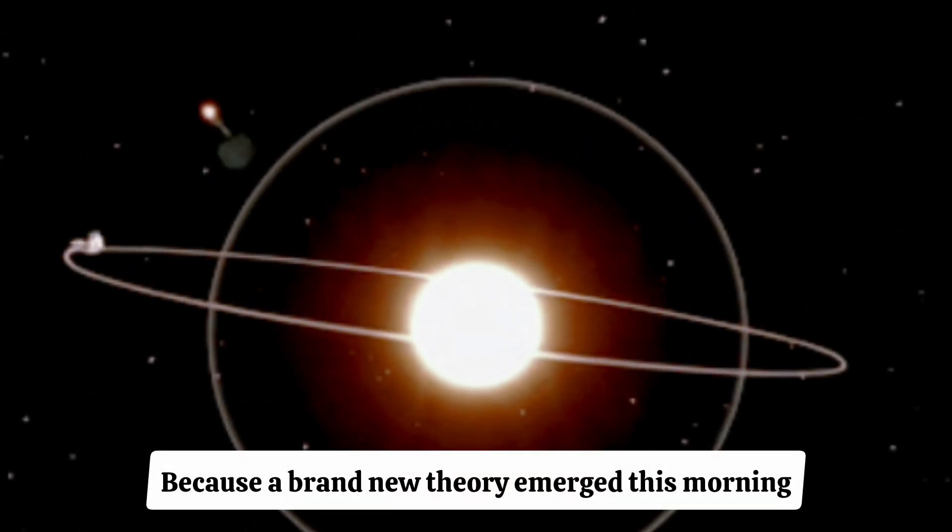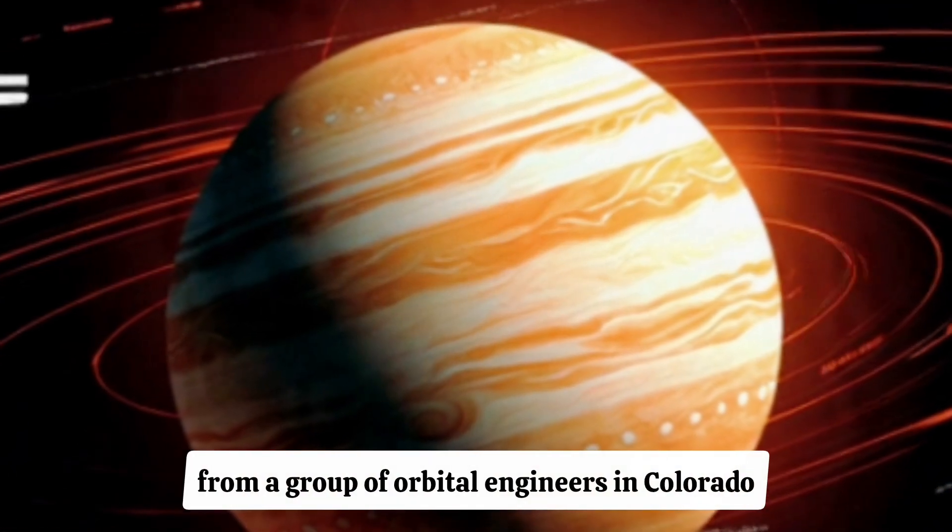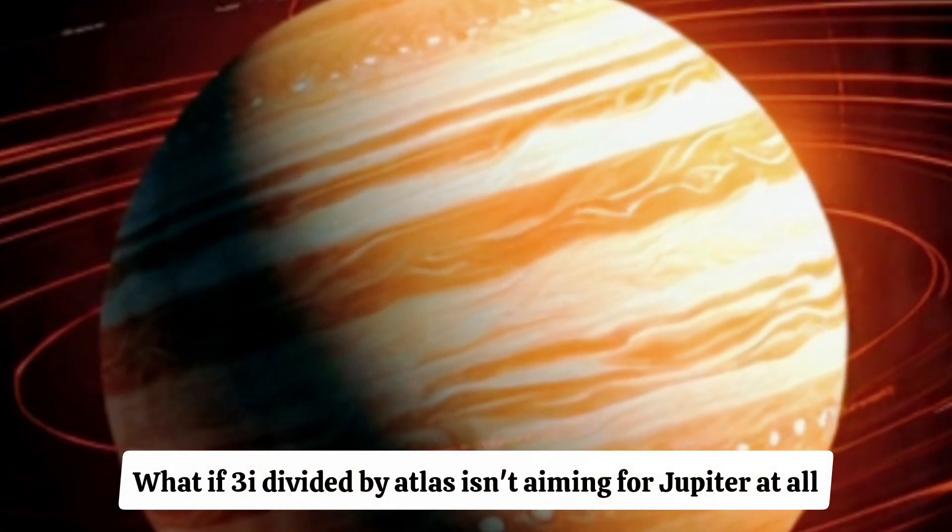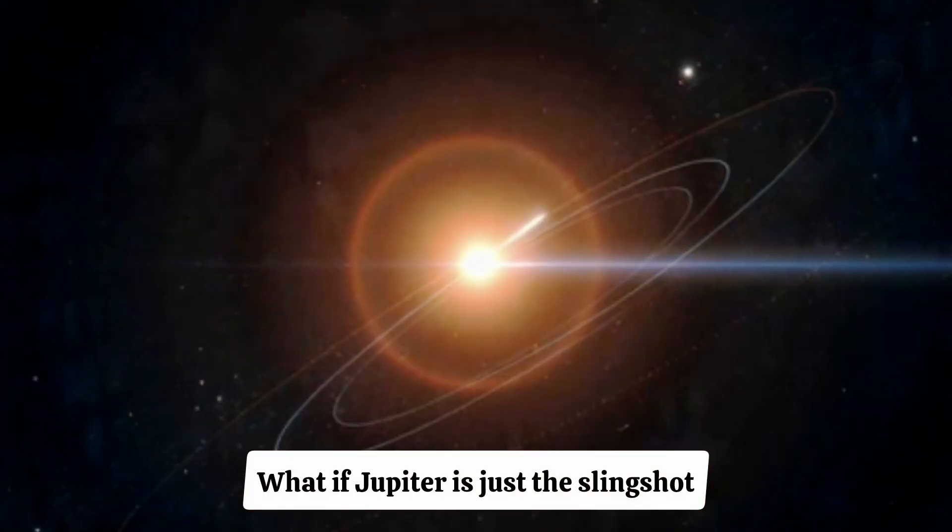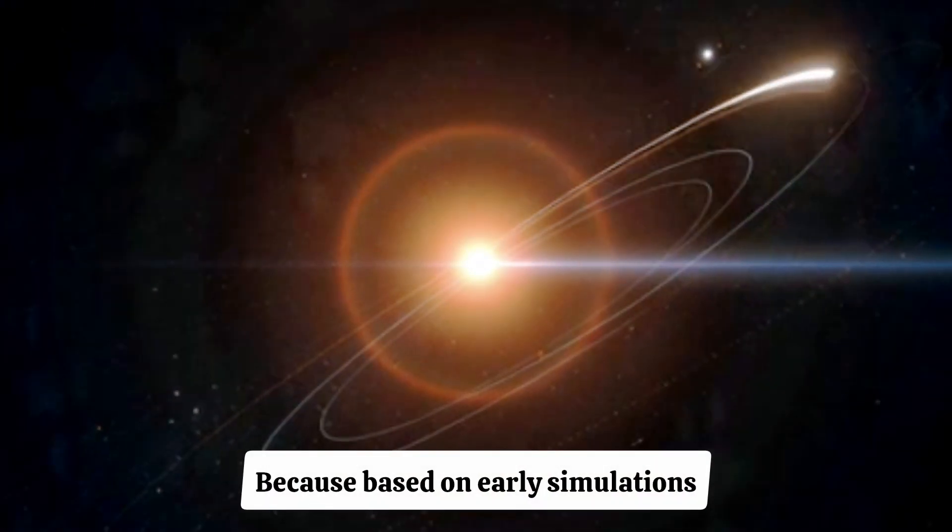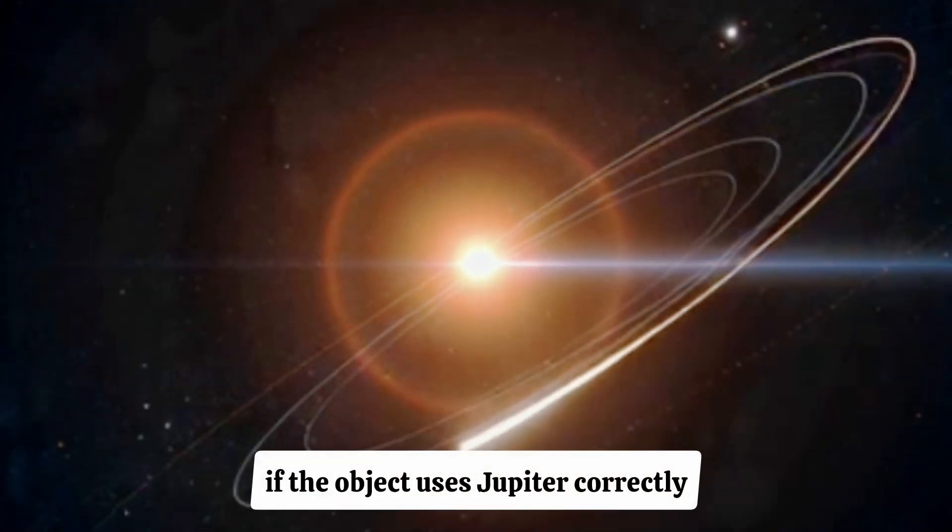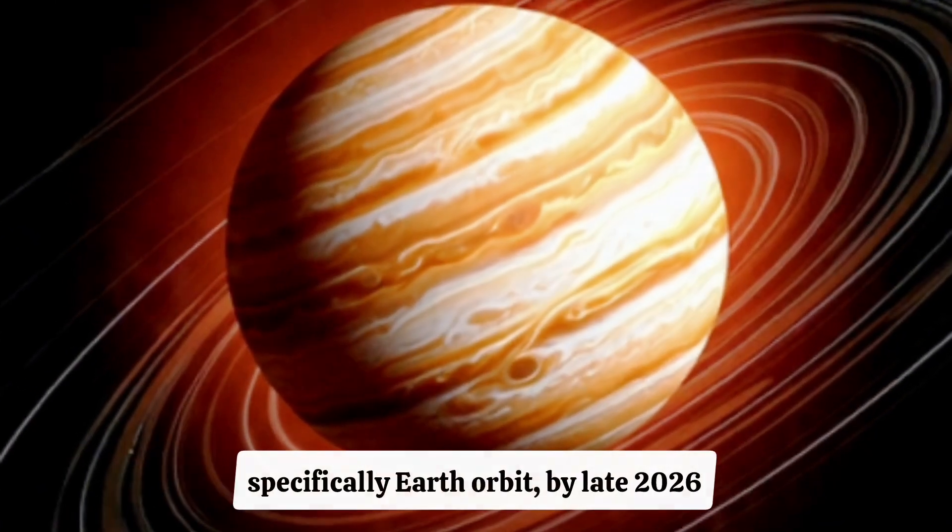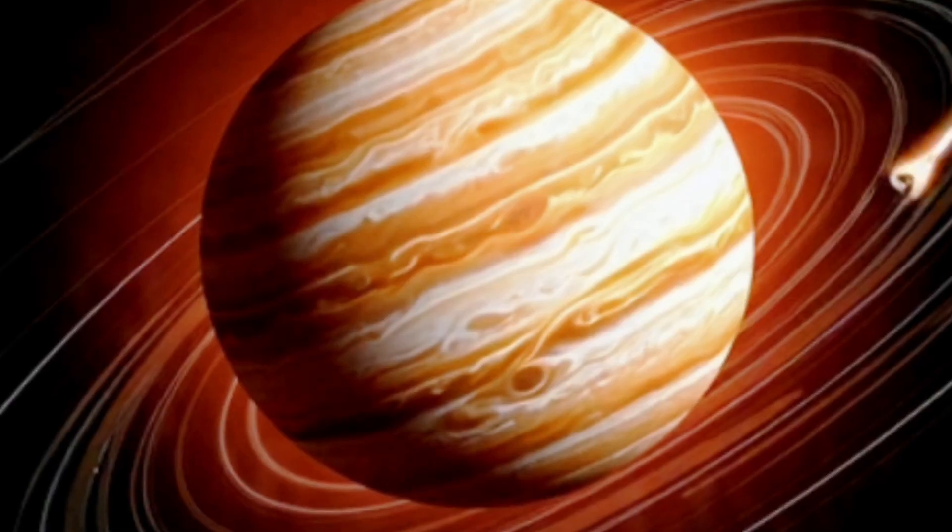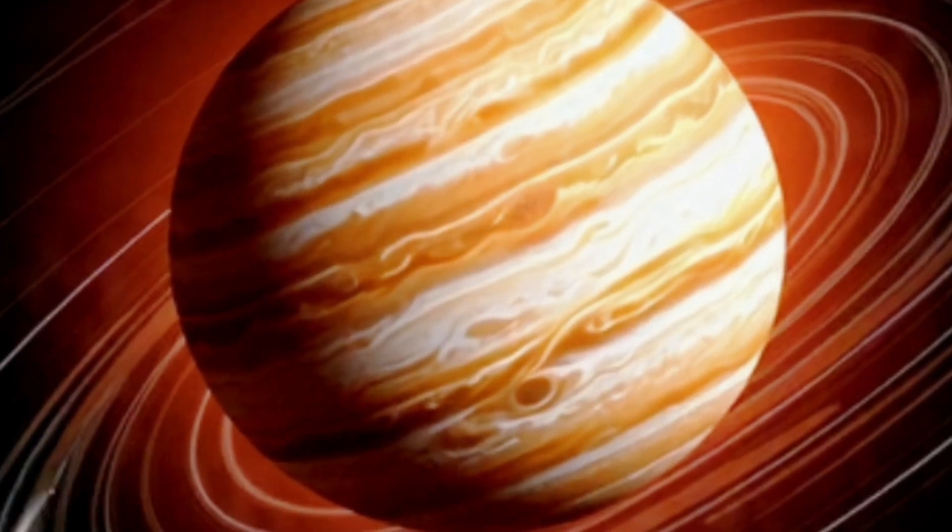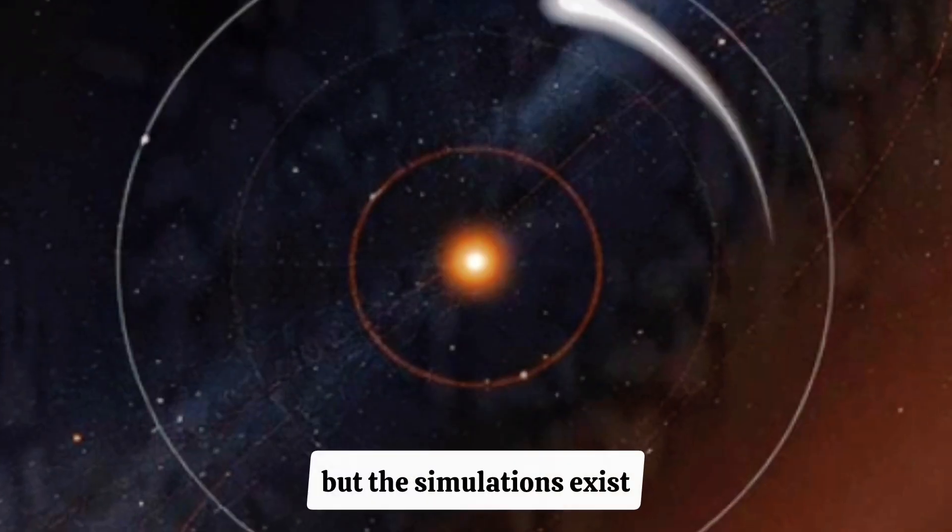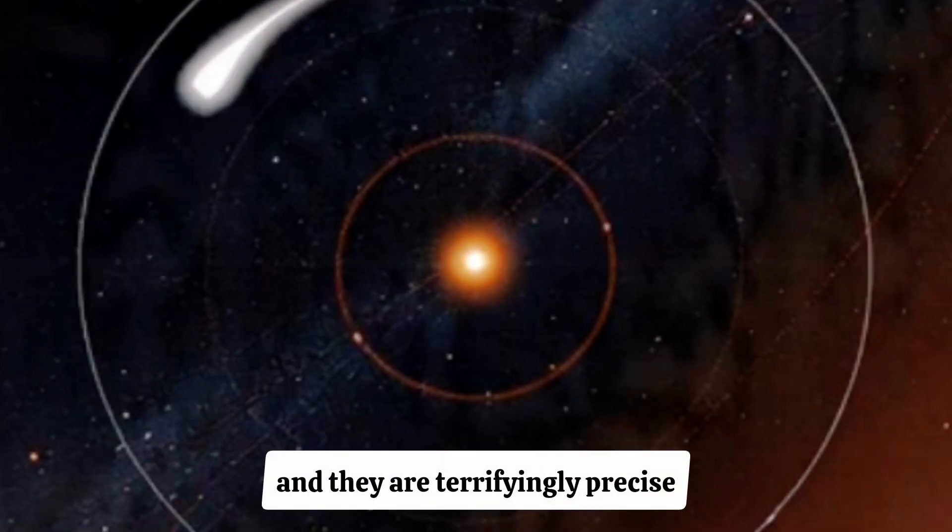And we're not done yet. Because a brand new theory emerged this morning from a group of orbital engineers in Colorado: what if 3i divided by Atlas isn't aiming for Jupiter at all? What if Jupiter is just the slingshot? Because based on early simulations, if the object uses Jupiter correctly, it could be redirected toward the inner solar system, specifically Earth orbit, by late 2026 or early 2027. That idea has not been publicly released yet. But the simulations exist. And they are terrifyingly precise.